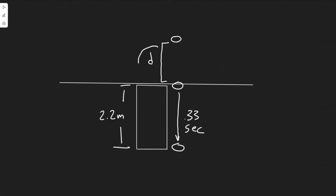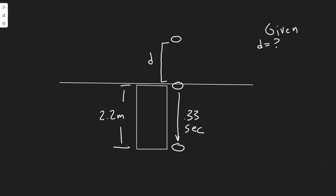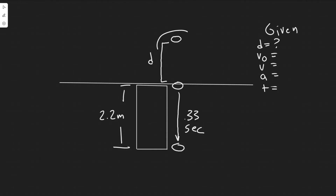Let's think about this problem. I'm going to be solving for the distance D, and I'll need certain kinematic variables to plug into my kinematic equations. Let's write them out: we have the distance — question mark — initial velocity, final velocity, acceleration, and time. I know I'm going to need three of them to solve for D. We know the initial velocity, since the stone is being dropped, is 0 meters per second.